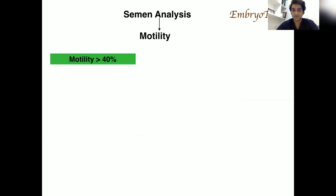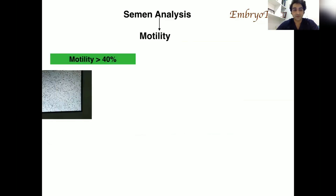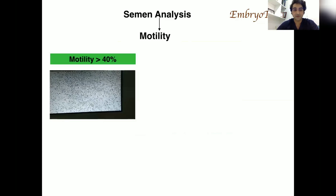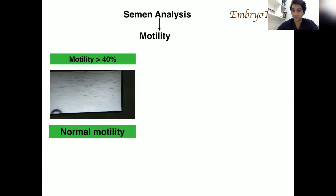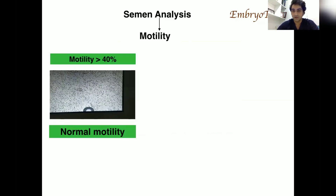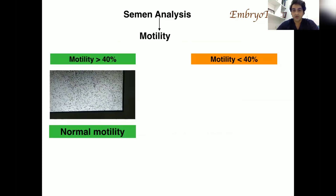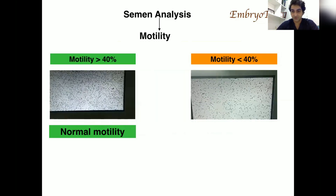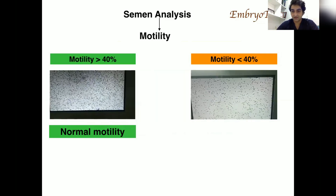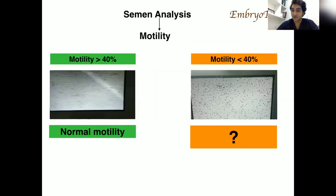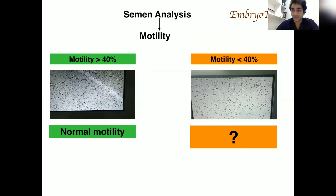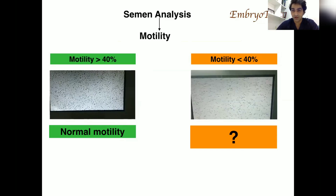Once we know the motility, if it is more than 40% then the sample is normal — as you can see in this video, the sample is normal. On the other hand, if the motility is less than 40%, as you can see in this video, then we can proceed towards asthenozoospermia or necrozoospermia.